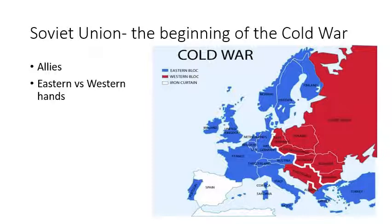Setting the stage: the Soviet Union, as we can see on this map, is really going to control Eastern Europe as a buffer zone, whereas the United States is going to link both Western Europe and Japan into their alliance. America is going to have overwhelming economic power. We also see military competition through things like the space race, the arms race, and atomic bombs.